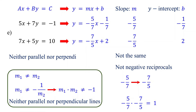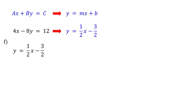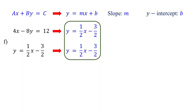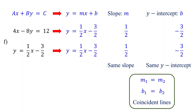Therefore, these lines are neither parallel nor perpendicular. What if both the slopes and y-intercepts are the same? The first equation is in standard form, so start by converting it to slope-intercept form. The second equation is already in slope-intercept form. While the first equation was in standard form, we couldn't directly see that these equations are the same. But now notice that they are indeed the same. Both have a slope of one-half and a y-intercept of negative three-halves. Two lines with the same slope and y-intercept are called coincident lines, which means they represent the same line. If you graph them, you will see that the lines completely overlap. Therefore, these lines are neither parallel nor perpendicular — they represent the same line.